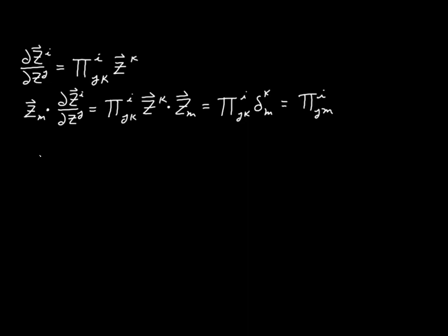So we'll have pi_ijk is equal to z_k dotted with the partial derivative of z^i with respect to z_j. So far, everything we've done here is completely analogous to what we did in video 28, where we were working with the Christoffel symbol. This index was in the upper position and this index was in the lower position — very similar, just with the indexes in a different place.